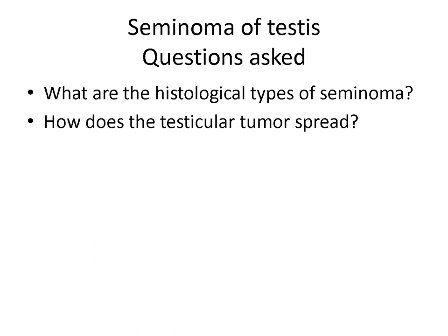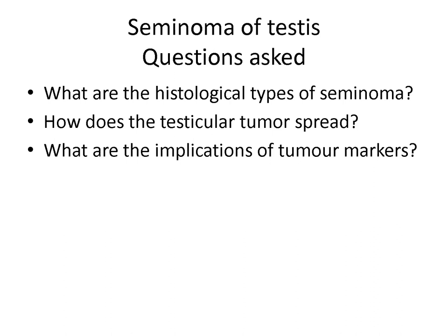Teratomas, on the other hand, are prone for hematogenous spread. Choriocarcinomas can also have hematogenous spread to the lungs, liver, brain, and bones. You can be asked about the different tumor markers for prognostication of testicular tumors. Serum alpha-fetoprotein and beta-HCG are elevated in patients with non-seminomatous germ cell tumors. HCG is more elevated in seminoma and alpha-fetoprotein elevation indicates the presence of a teratomatous element.